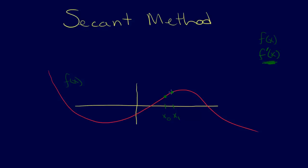We use those two guesses x0 and x1, and they don't have to bracket the root. We use the point x1 and get the line between these two points, and this line serves as our approximation to the derivative. We then project down to the x-axis and find the point where it intersects, and that will be our new x.